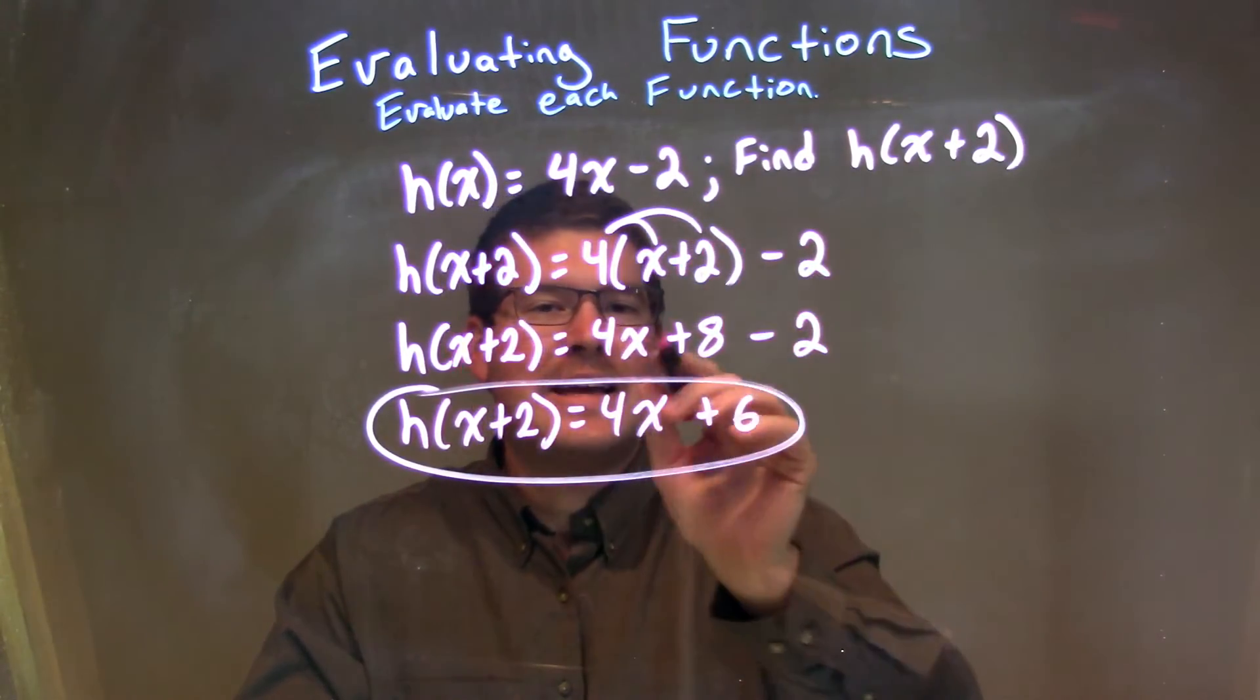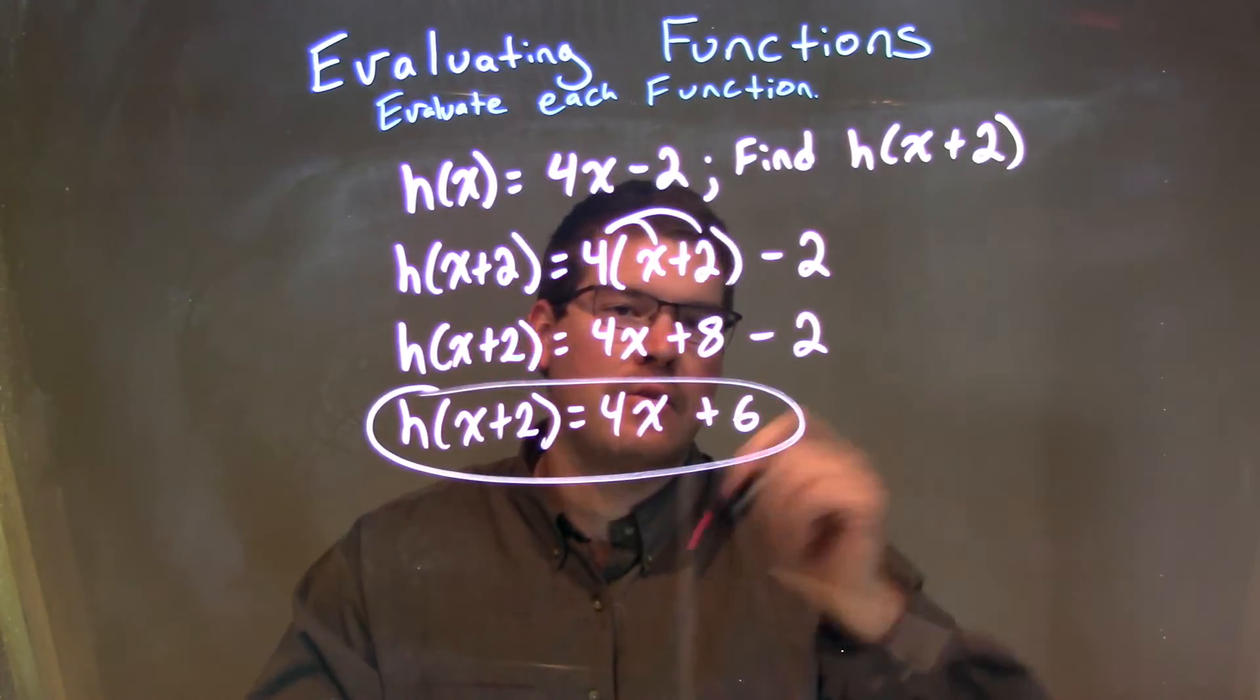We distribute the 4 across both parts, giving us 4x plus 8, and then we have a minus 2 that will drop down.